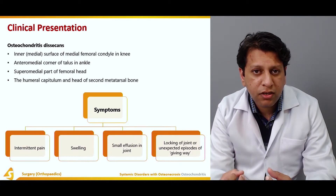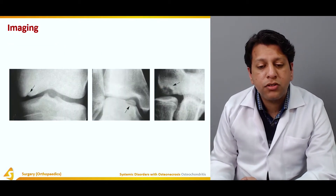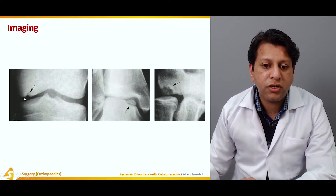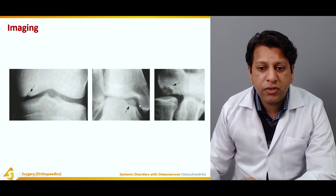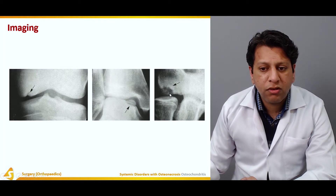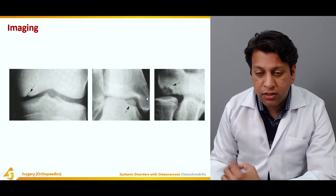This is showing the medial femoral condyle — you can appreciate that the articular surface has collapsed because the bone has necrosed under the articular surface. This is showing osteochondritis dissecans of the elbow in which the capitulum bone has collapsed, producing lucency. There is a small dead bone attached to the articular surface, which is seen as a sclerotic spicule here.